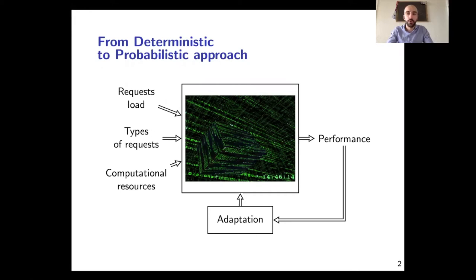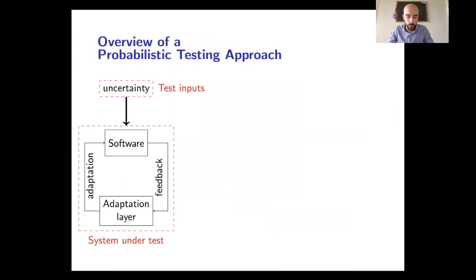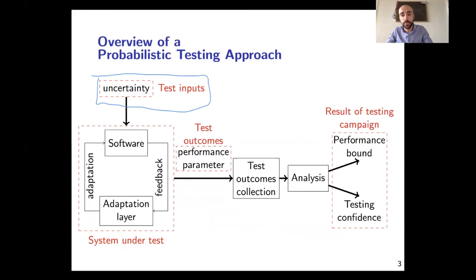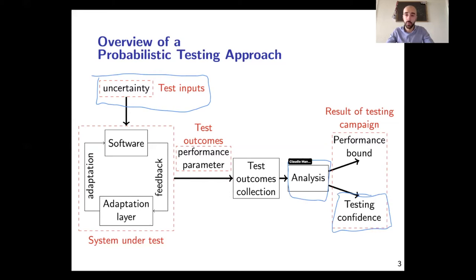So let's see what it means to have a probabilistic approach in the testing of self-adaptive software. Having a probabilistic approach means that we will randomly generate test case scenarios for the uncertainty of the system. This will allow efficient exploration of the possible realizations of the uncertainty. The problem is that once we have done this, we will obtain different possible realizations of the performance of our adaptation strategy. The question is: how can we analyze such data to obtain general bounds on the performance of the system, and what is our confidence in those bounds — so that we know whether we have tested enough or need to carry on more tests?